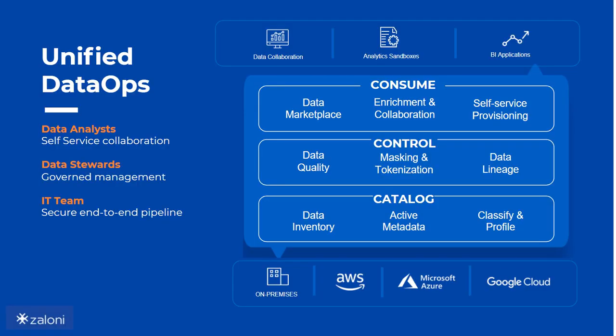From a technology standpoint, Zaloni's software product is called Arena — one single unified DataOps platform. We divide our technical functions into three buckets. The first is knowing your data, which we call cataloging. As we are moving data into whatever environment — the raw zone, refined zone, trusted zone, operational data store — you are inventorying, cataloging, and tracking that data, understanding its lineage and history. Where did it come from? We're also understanding what kind of data it is as it comes in.